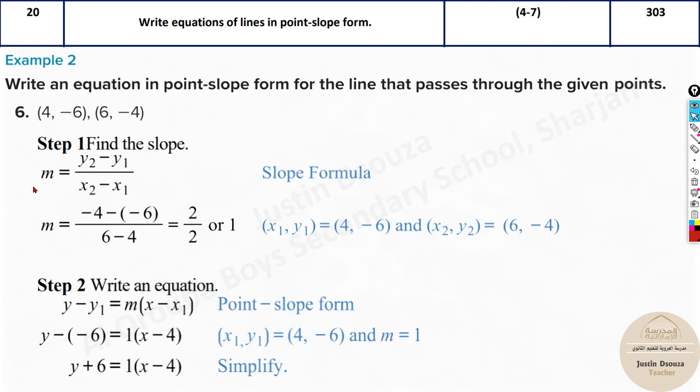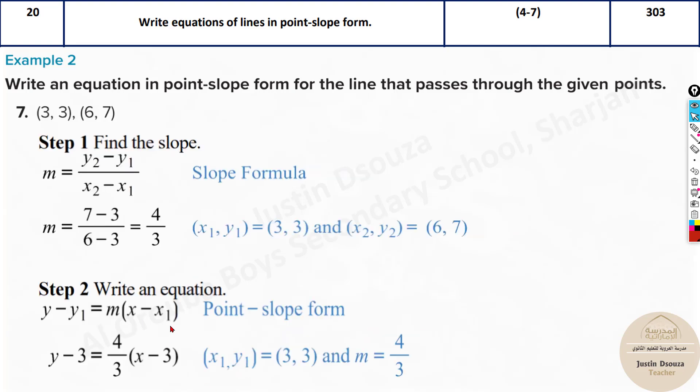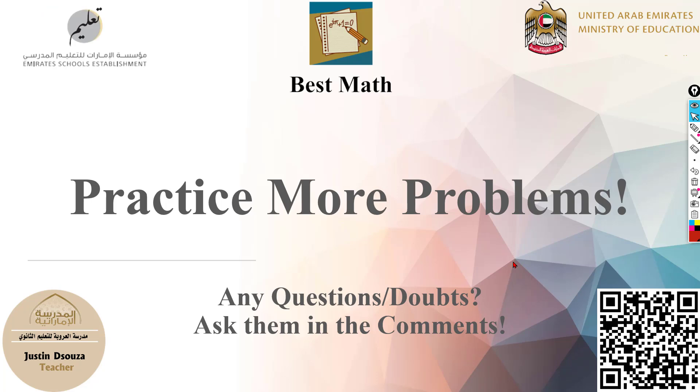Same thing with the next problem here. Step one and step two, only two steps, only two formulas: the slope formula and the point-slope form. Just that the x2 and y2 are written as x and y. So don't go to simplify further here. Once you write the equation, leave it.